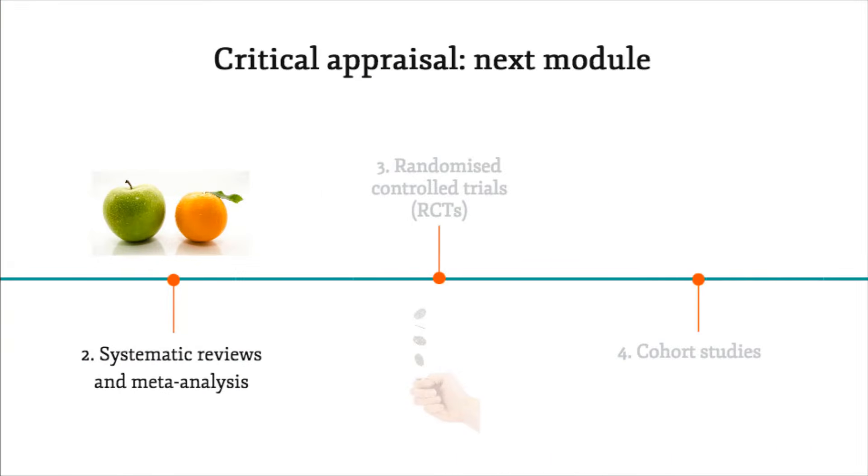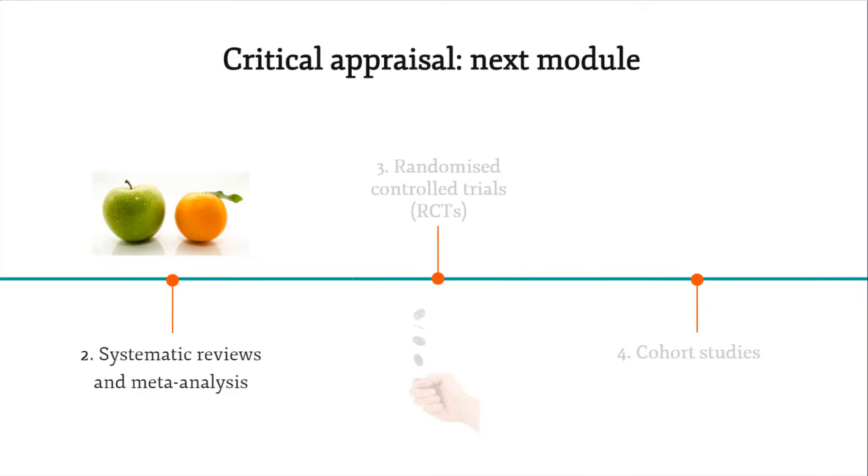The second module in this series will look at systematic reviews and meta-analysis, and we will start putting critical appraisal concepts into practice. We will also demonstrate how we would critically appraise a systematic review using the CASP checklist, with the opportunity to test your learning by appraising a selected review using the methods we will discuss.